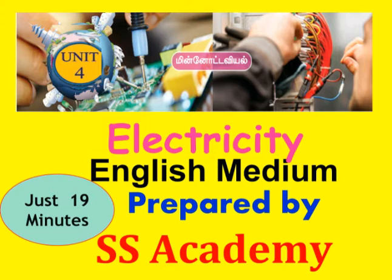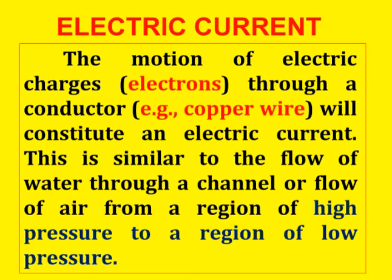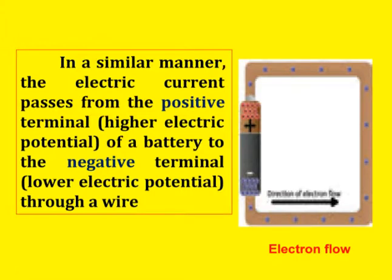Let us start electric current. Electric current is a motion of electric charge — charges, meaning electrons, through a conductor. For example, copper wire constitutes an electric current. This is similar to the flow of water through a channel, or flow of air from a region of high pressure to a region of low pressure. In a similar manner, electric current flows from the positive terminal — that is, higher electric potential — to the lower electric potential, i.e., positive terminal to negative terminal through a wire.